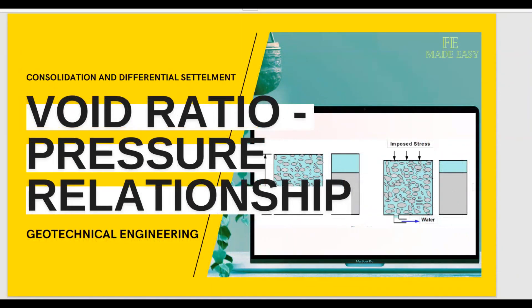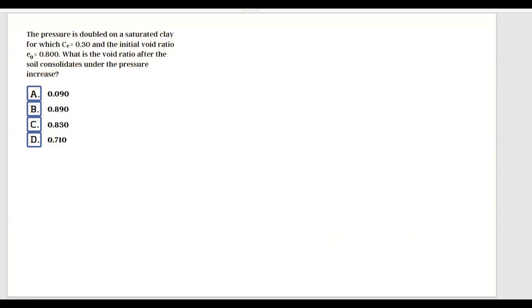Welcome back to the channel. Today we're going to continue with geotechnical engineering and talk specifically about the void ratio-pressure relationship. The pressure is doubled on a saturated clay for which the compression index equals 0.30 and the initial void ratio equals 0.800. What is the void ratio after the soil consolidates under the pressure increase?